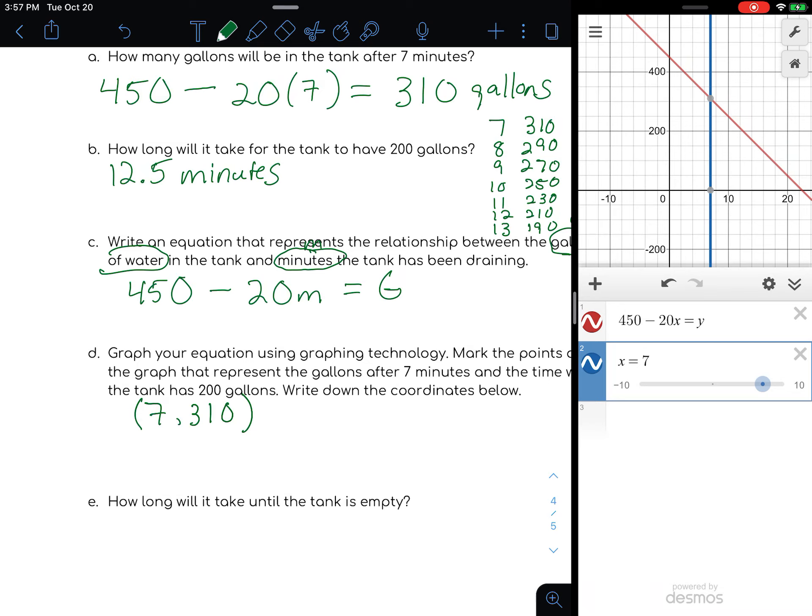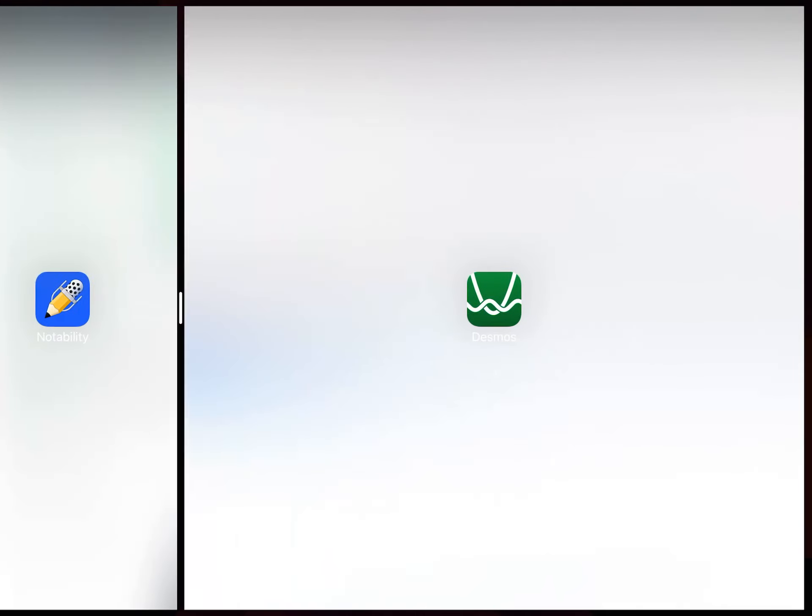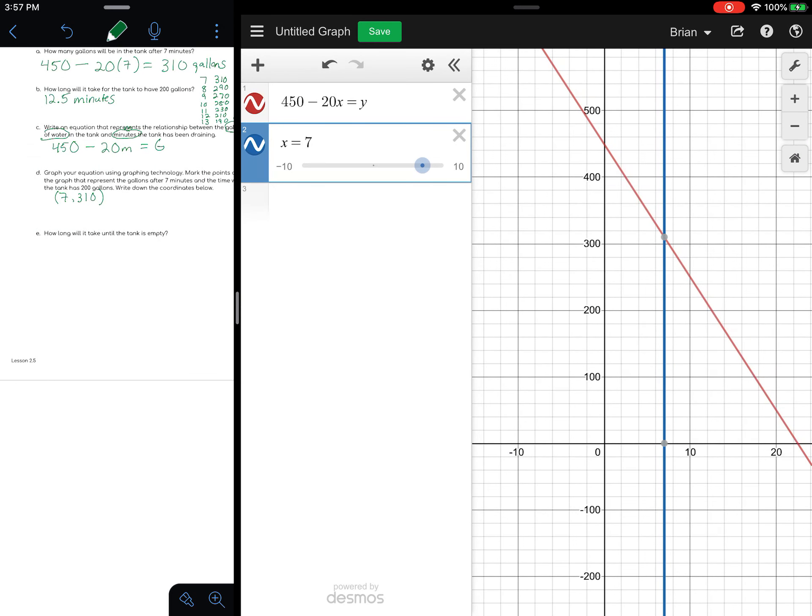If you wanted to show this actual graph, you can do the power button and home button to do a screenshot and drag that into your notes. But for now we'll just keep it like this. So 7, 310 is going to be our coordinates.